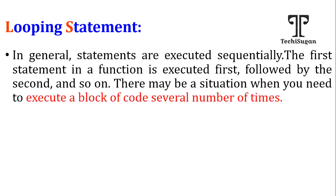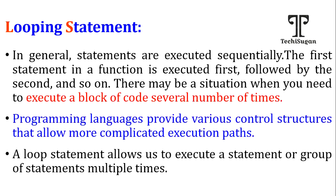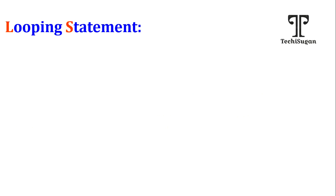Whenever I mean programming, how the program executes — a program executes in a sequential manner where the first statement executes, then the second line, and it goes on. Whenever the situation arises where you want a certain block of code to be executed multiple times, we use a looping statement. How does this looping execute in Python?